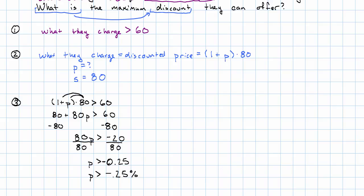Well, remember, the discount—that's a negative change. We can't have anything that's more negative than 25%. In words, we would say, the maximum discount is 25% off.